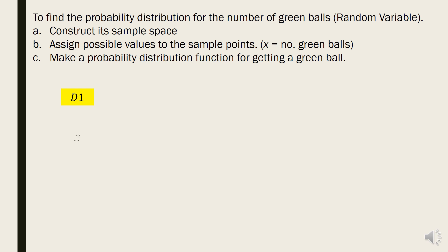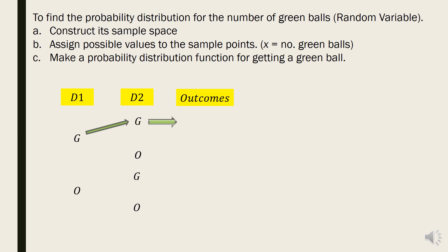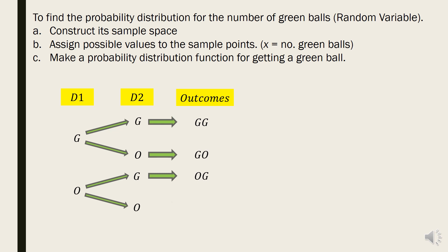In each draw, the ball is either green or orange. The possible outcomes are: both green (GG), green then orange (GO), orange then green (OG), or both orange (OO). Assigning numerical values based on the number of green balls: GG gives x = 2, GO and OG each give x = 1, and OO gives x = 0.